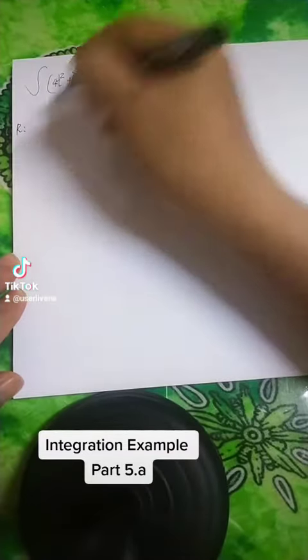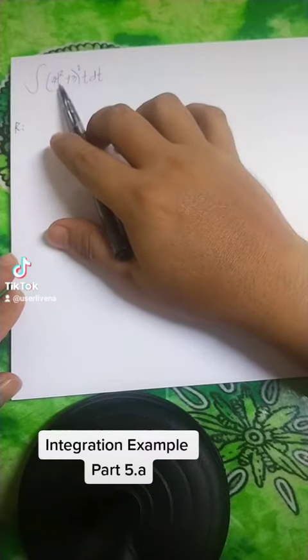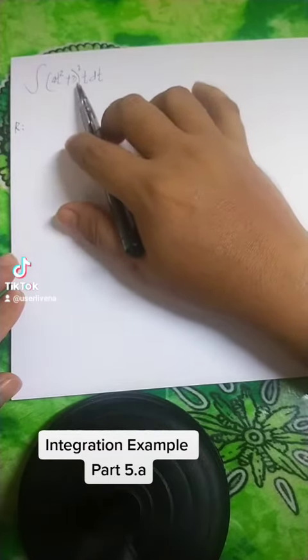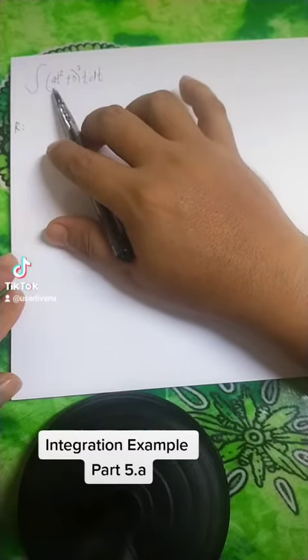Then the first one is we're going to rewrite that this one is equivalent to 4t squared raised to the power of 2 plus 2 times 3 times 4t squared plus 3 squared, that is by the square of a binomial.